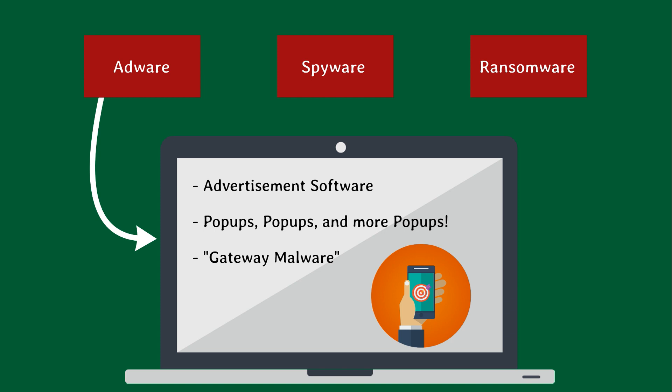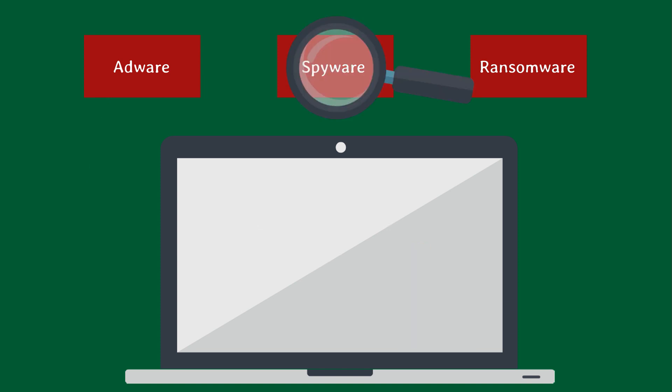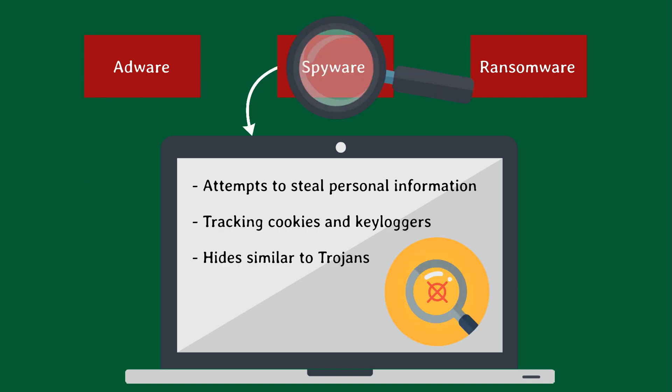Another family of malware is spyware. Spyware usually works to steal your information or track the places you've been. Sometimes it tries to be useful, similar to a Trojan, by pretending to be a toolbar for your internet browser. But in the background, it is secretly redirecting you to malicious websites or recording your keystrokes. Spyware typically doesn't directly damage your computer, but it will try to actively steal your identity and your money.